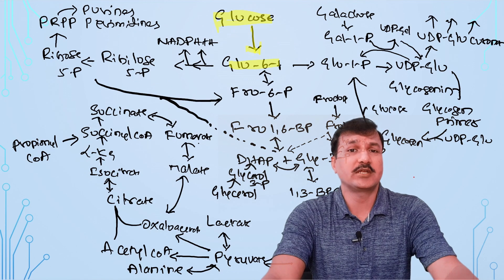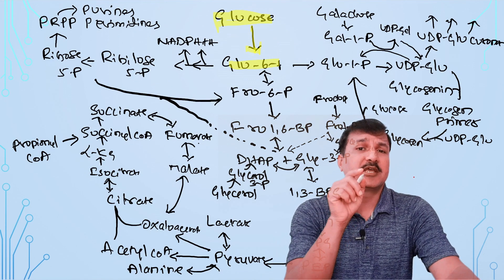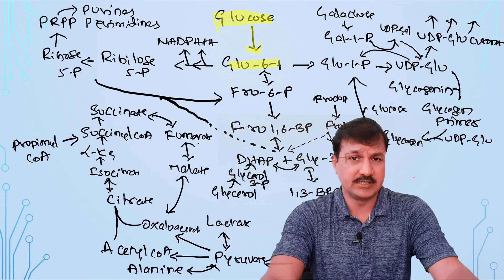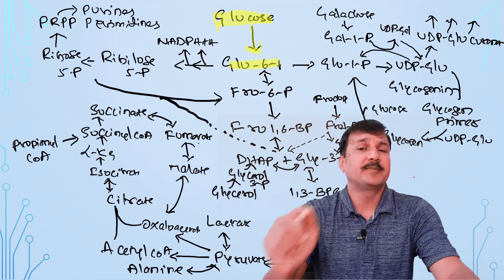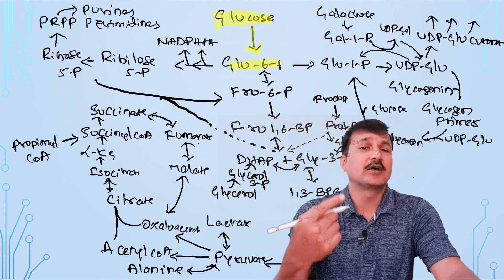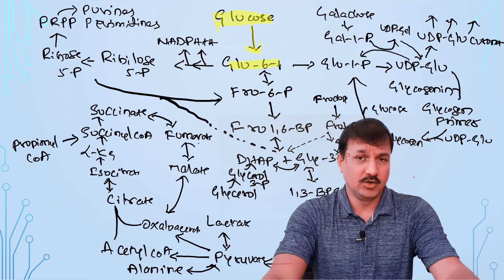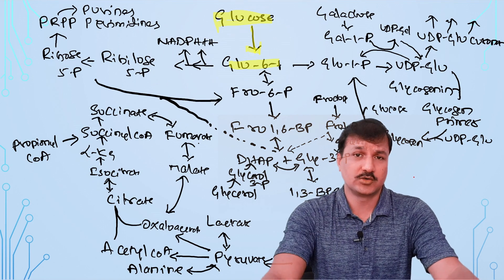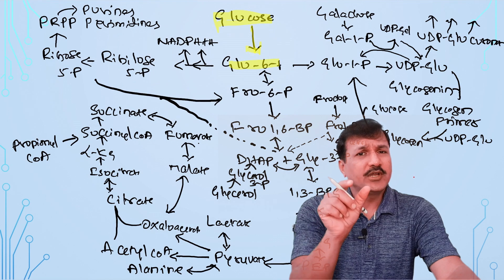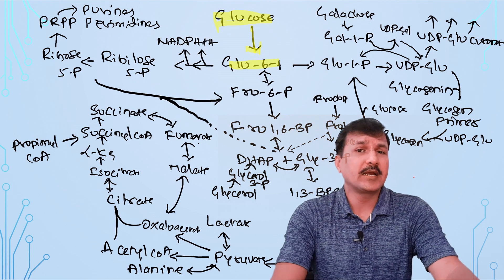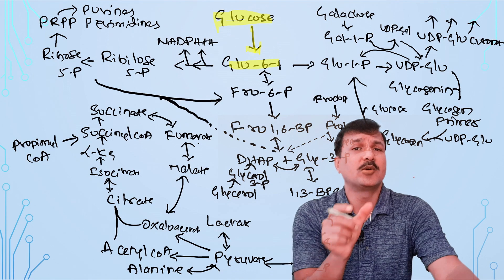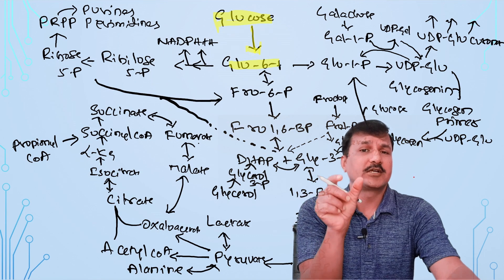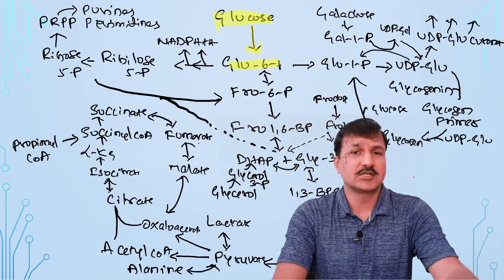Glucokinase in the liver takes care of excess glucose present in blood after meals. Glucokinase in the beta cells of pancreas helps in the release of insulin in response to higher blood glucose levels. Mutation in the gene coding for pancreatic glucokinase gives rise to MODY type 2 — maturity onset diabetes of the young type 2.